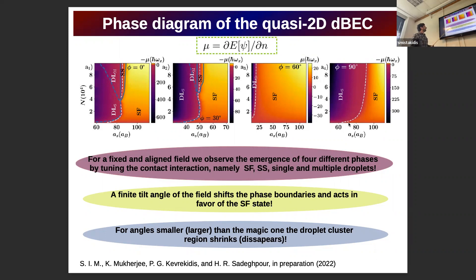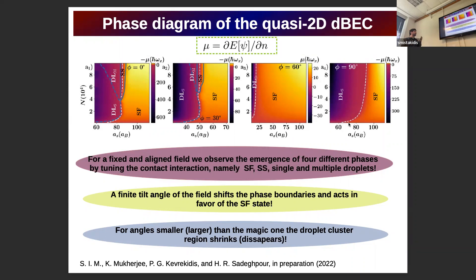Concentrating on the first panel, which corresponds to the aligned magnetic field — the situation considered in the literature so far — for large S-wave interaction we have a superfluid state. Decreasing the S-wave interaction, in the vicinity of zero chemical potential marked by the dashed white line, we see a supersolid state. Decreasing further, we can enter either a single droplet regime or the multiple droplet regime, which has also been referred to in the literature as the insulating droplet regime.